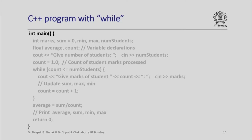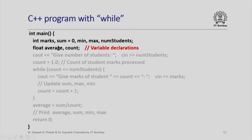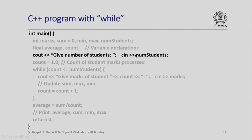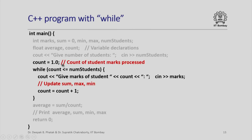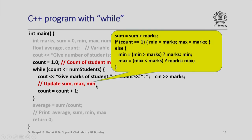Here is how our C++ program with while looks. We have variable declarations; notably, count is declared as float — I will explain why shortly. We initialize sum to 0 during declaration, ask for and read the number of students, then initialize count to 1.0. count tracks how many students' marks have been processed so far. Then the while loop: while count is less than or equal to number of students, we ask for marks, input them, update sum, max, and min, increment count, and loop. To update sum we add the current marks; if count equals 1 we set min and max directly, otherwise we use conditional expressions.